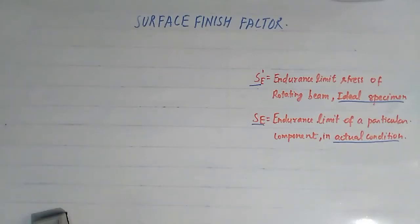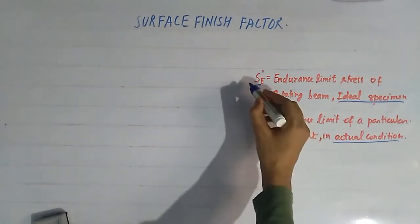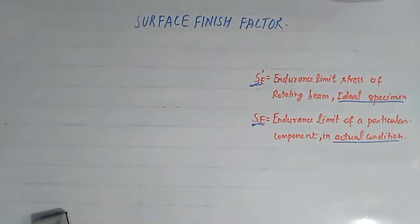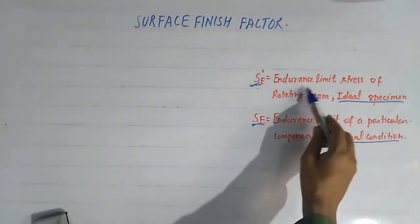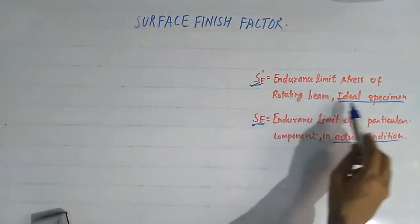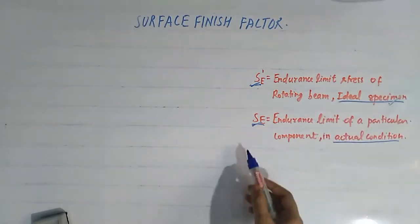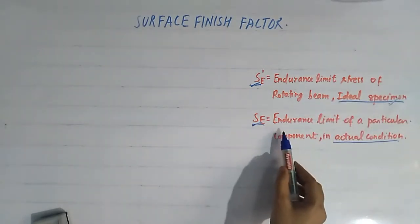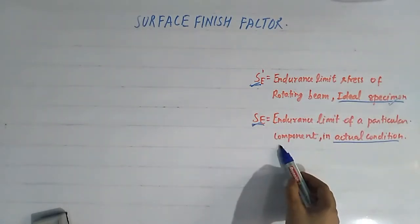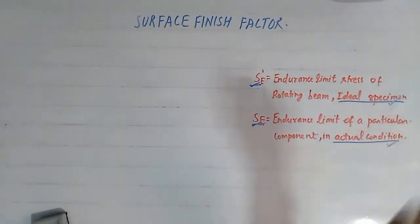Hello friends, today in this video we are going to discuss how surface finish alters the endurance limit of a component. Here, the symbol Sc-dash denotes the endurance limit of a rotating beam ideal specimen, and Sc denotes the endurance limit of a particular component in actual condition.